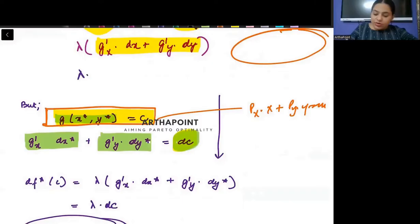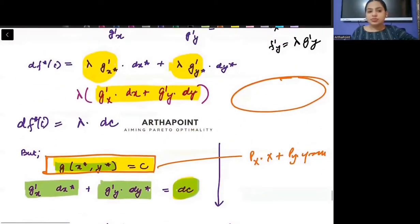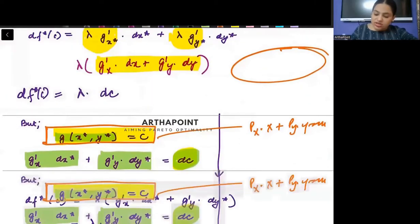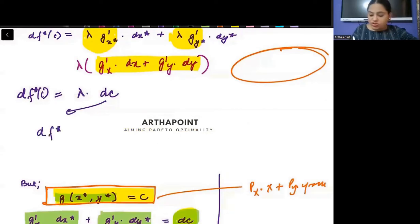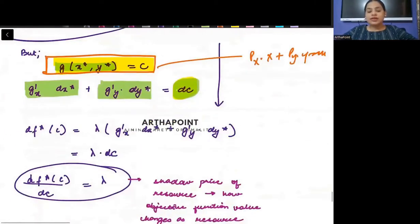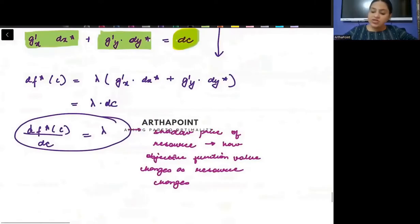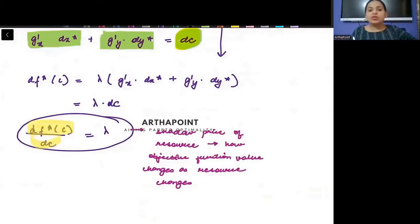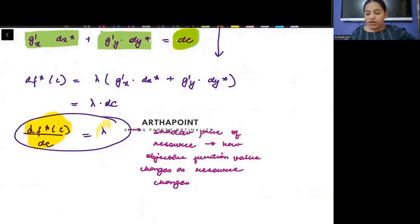So I will just have lambda into dc and this is nothing but d of the objective function. So can I just take this on the other side and I will get this is equal to lambda. So we have proved that lambda is nothing but once you have your objective function maximized and you differentiate it with respect to the resource, you get the value of the lambda. Lambda is called the shadow price of the resource. The shadow price of a resource tells us how the objective function value will change when the resource changes. Is this clear?